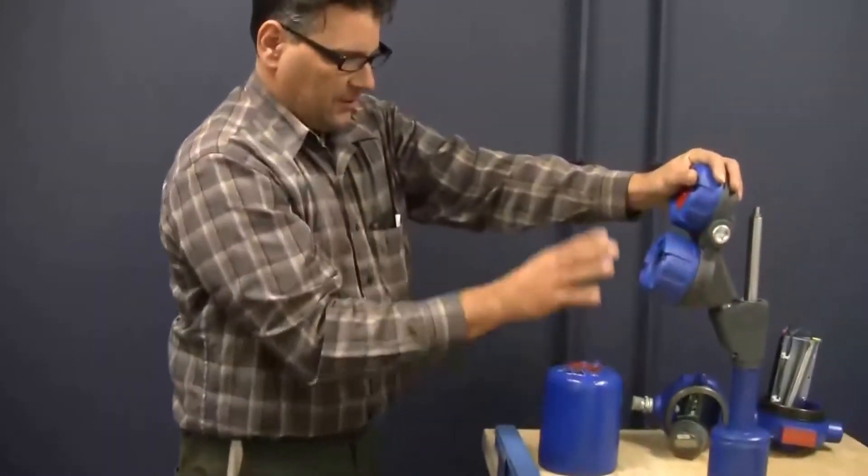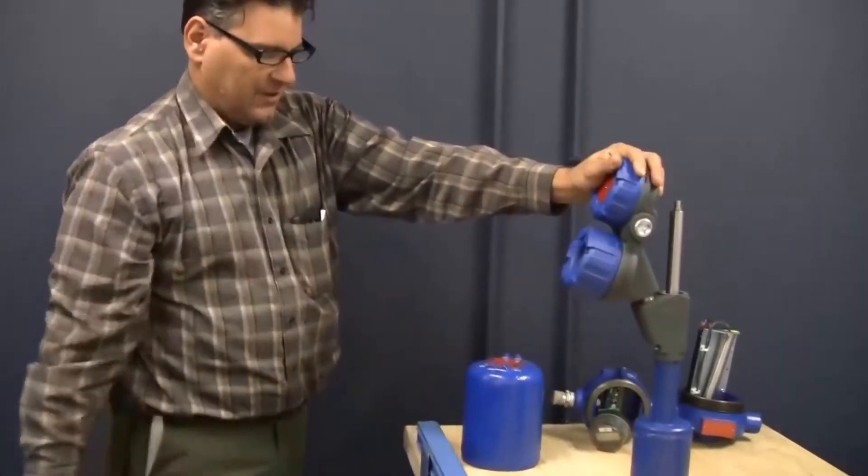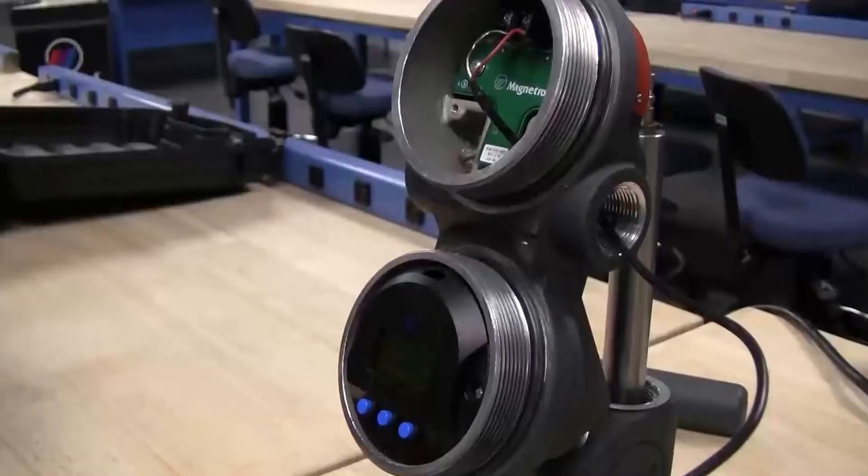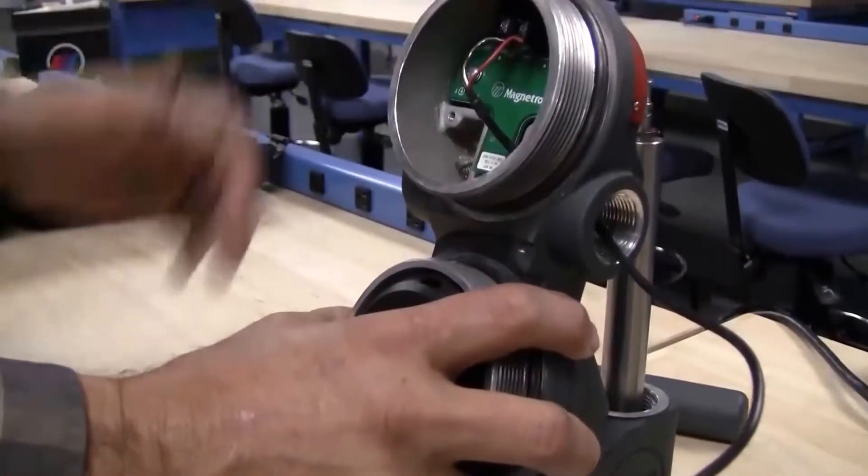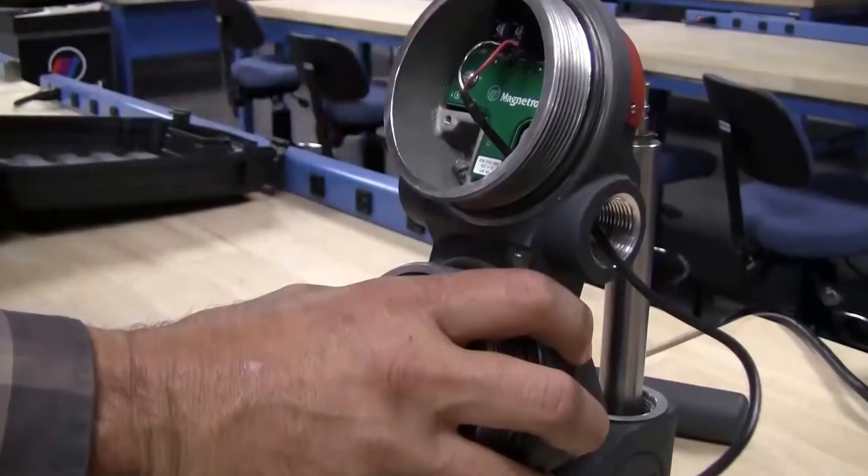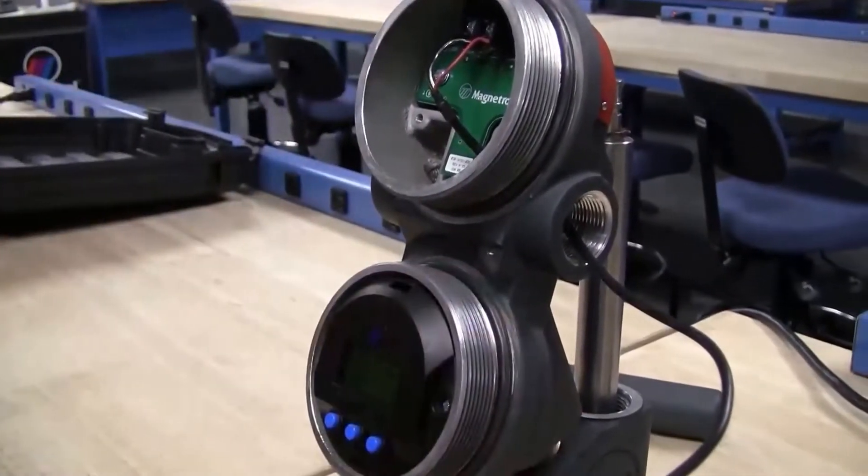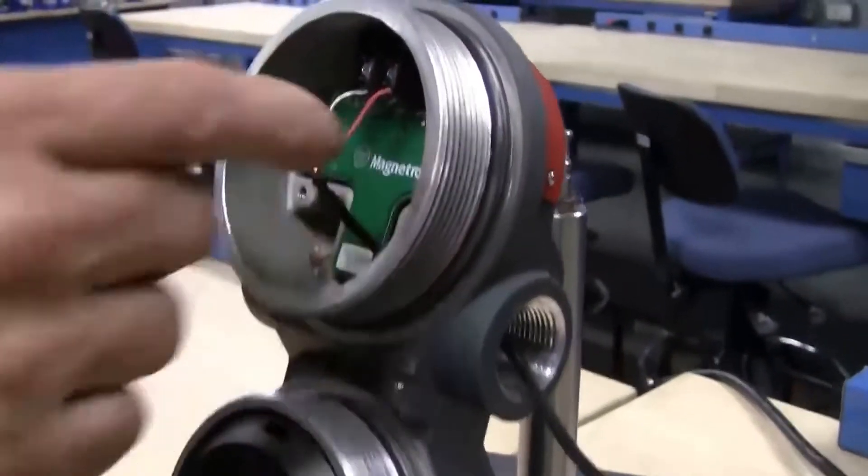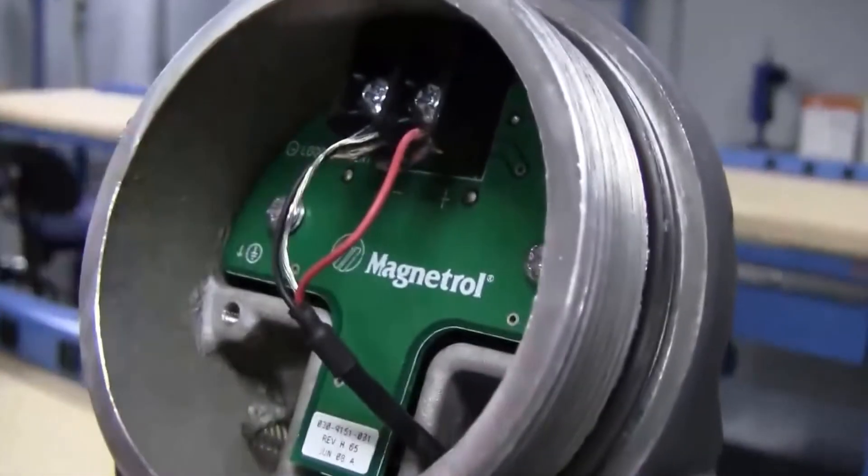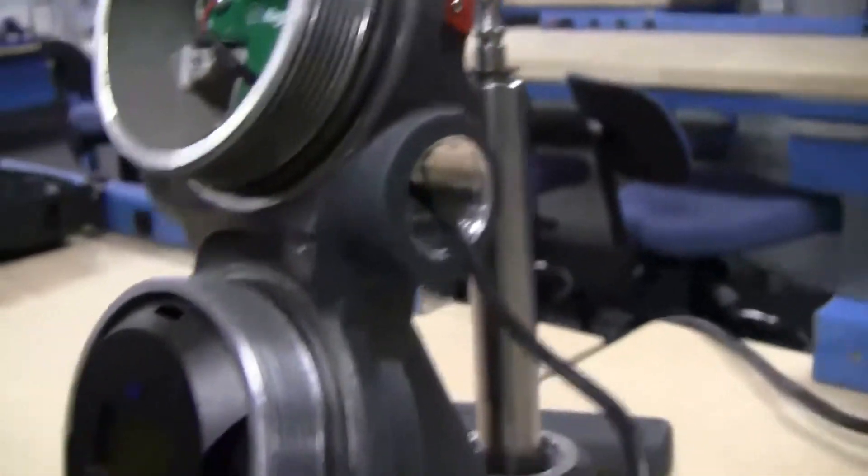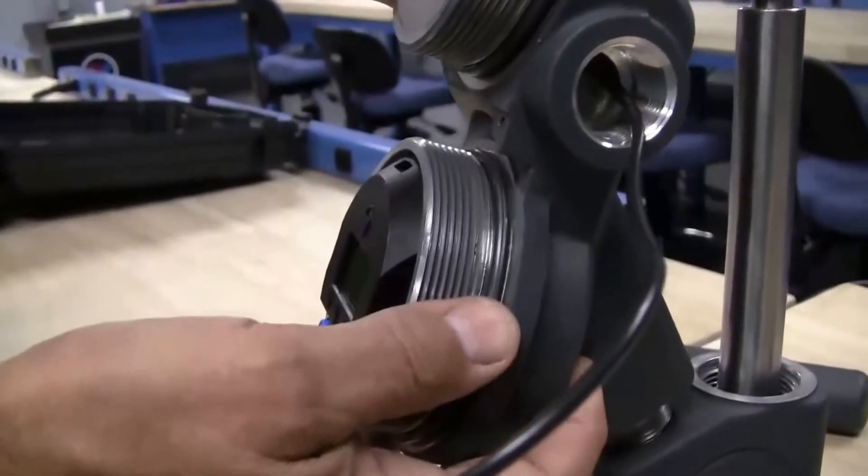From there, we're going to power this up and run through a quick setup procedure. Once you have your head installed on the old ES2 top hat, you are then ready to power it up with a two-wire loop, positive and negative. And then we're going to run through what we call a user setup on the device, and we'll show you how to do that.